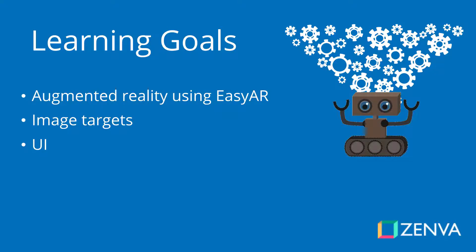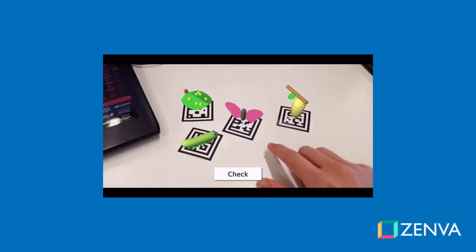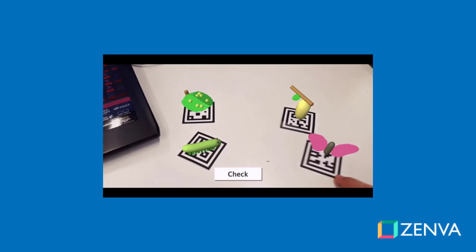So what are the things we're going to be learning this course? Well, first of all we're going to be learning how to use the EasyAR SDK in Unity. This is an augmented reality SDK that works by using image targets. Image targets are these little QR codes that the app can identify — it can figure out its position, rotation, scale, and then render images, particle effects, or whatever you want on top of them. In our case we're going to be rendering our four different models as seen in the gif here.